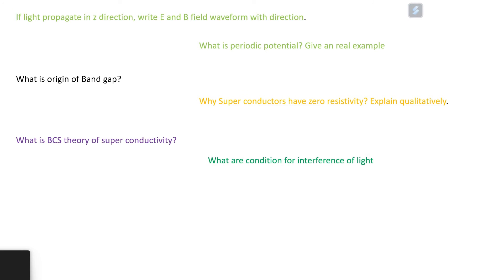What are condition for interference of light? What will resultant intensity of two light interfering with phase factor phi? If light passes through a lens, how will resulting output will look on a screen?